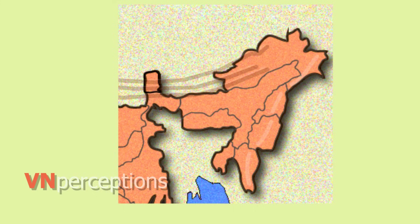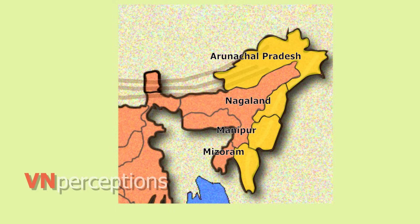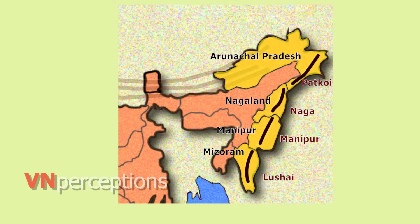Purvanchal runs through the states of Arunachal Pradesh, Nagaland, Manipur and Mizoram. As a result of the eastward movement of the Indo-Australian plate, a series of hills have developed in this region. From north to south, these hills are referred to by different names: Patkai Hills in Arunachal Pradesh, Naga Hills in Nagaland, Manipur Hills in Manipur, and Lushai Hills in Mizoram. The highest peak of the Naga Hills is Saramati Peak at 3,826 meters.